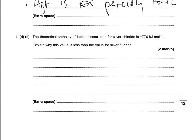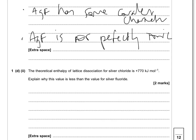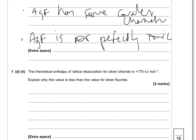Next question: the theoretical enthalpy of lattice association for silver chloride is 770. Explain why this value is less than the value for silver fluoride. The fact that it's less suggests the attraction between the chloride ion and the silver ion is weaker — that gets you one mark. That's because the chloride ion is larger, so the two ions can't get as close together. Therefore the attraction between the silver ion and the chloride ion is weaker — there are your two marks.